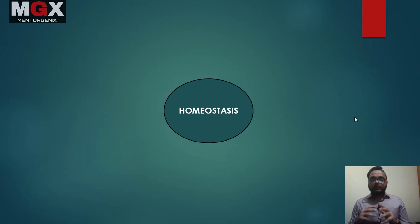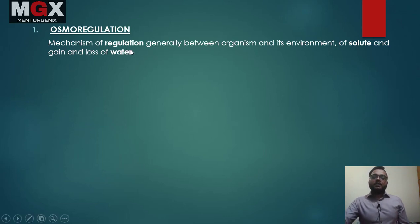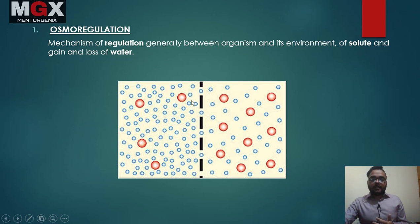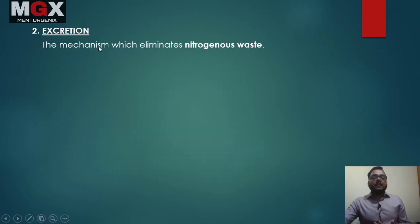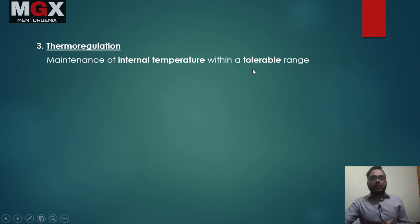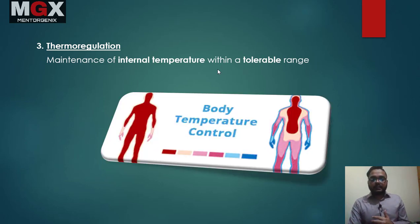This was the homeostasis introduction. Homeostasis has three types: osmoregulation, thermoregulation, and excretion. Osmoregulation is the mechanism of regulation of solute and water gain or loss between organism and environment. Excretion is the mechanism which eliminates metabolic waste, especially through the urinary system. Thermoregulation is maintenance of internal temperature within a tolerable range so that body cells are not harmed — you cannot denature the enzymes.